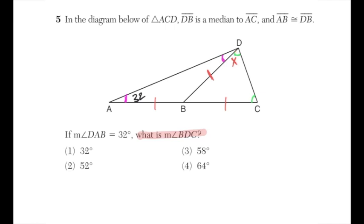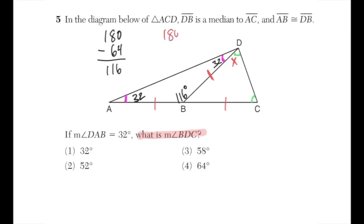Since triangle ABD is isosceles and angle DAB = 32°, angle ADB = 32° as well. The sum of interior angles is 180°, so 32 + 32 = 64, meaning angle ABD = 180 − 64 = 116°. Since angles ABD and DBC form a linear pair, angle DBC = 180 − 116 = 64°.